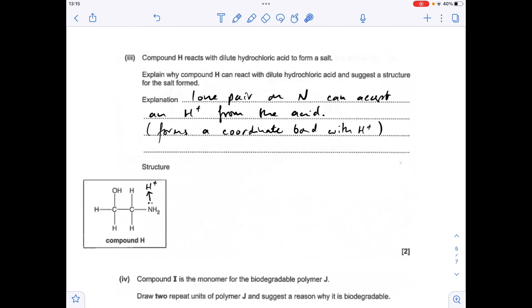Next part, why can compound H react with dilute hydrochloric acid? So you can see on this little diagram here, it's making a coordinate bond to the H+ ion from the acid by donating that pair of electrons on the nitrogen. So the way we would write that is, the lone pair of the nitrogen can accept an H+ ion from the acid. It's forming a coordinate bond with the H+, but that extra bit of detail wasn't needed for this question. Sometimes it is if it's worth a few more marks than that. So in terms of the structure of the salt, it's going to look like this, because obviously the acid in question was HCl.